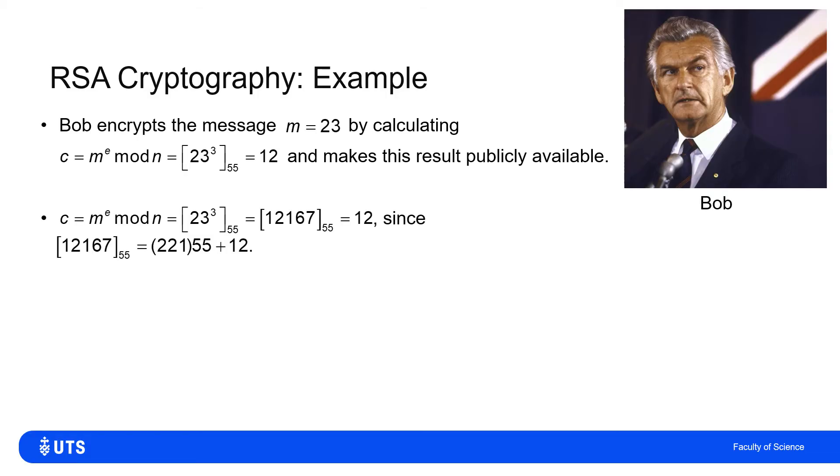And so just to check that, in fact, we could do a cubing without it blowing up. So 23 cubed is 12,167. And in fact, that's 221 lots of 55 plus a remainder of 12. So Bob starts with the message m is 23. He doesn't want to send that message unencoded. So he uses the publicly available information and he sends Alice the message C equals 12.